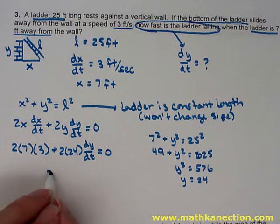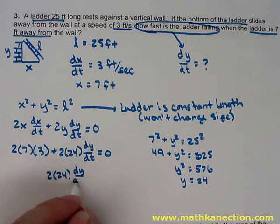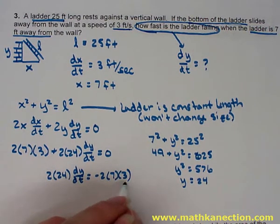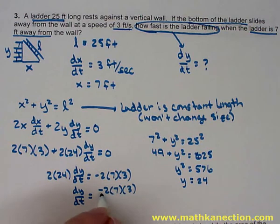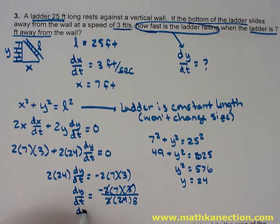It's easier not to multiply out the coefficients since we don't get to use a calculator on this problem. Leaving as 2 times 24 times dy/dt equals negative 2 times 7 times 3, then solving for dy/dt: negative 2 times 7 times 3, over 2 times 24. Reducing the 2's and reducing the 3 with the 24, we get dy/dt equals negative 7 eighths.